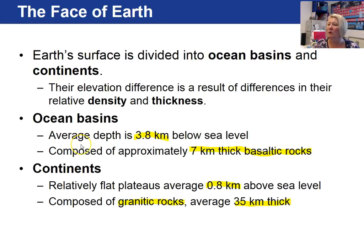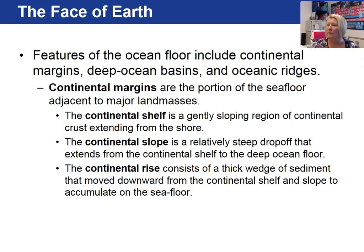Looking from space, we see ocean and continents. Ocean basins average a depth of 3.8 kilometers, composed of basaltic rocks averaging seven kilometers thickness. Continents are 0.8 kilometers average height above sea level, composed of granitic rock averaging 35 kilometers in thickness. Now let's start with a detailed look at our ocean floors, beginning with a feature called the continental margin.